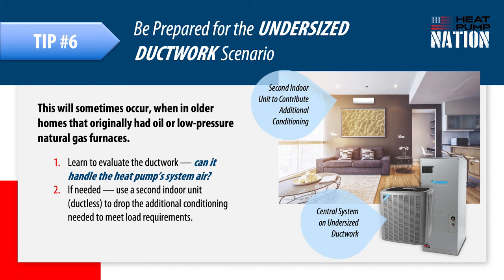The remaining heating requirement that can't fit through the ductwork is distributed by a second zone using a ductless indoor unit, located in an area that is either underserved by ductwork or experiences the greatest heat loss. In this design, the two indoor units work simultaneously to condition the home — don't think of them as two discrete zones, but as two heat pumps working on the same air volume. I've used this strategy many times with great results.